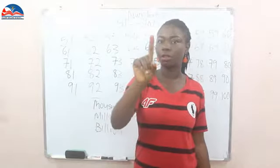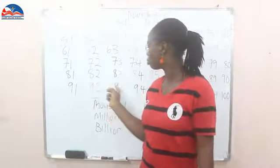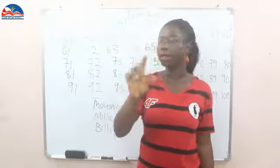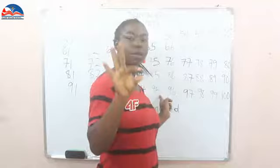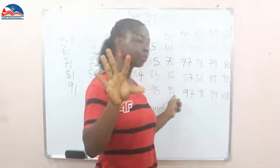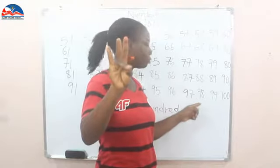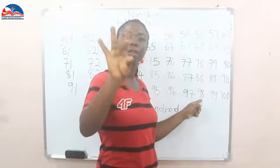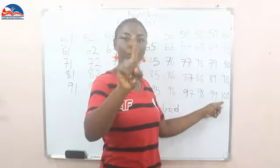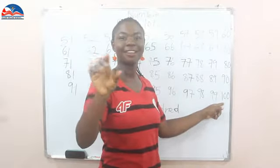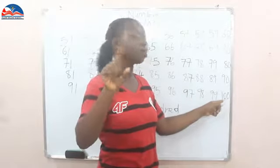91, 92, 93, 94, 95, 96, 97, 98, 99, 100. It's on zoom — this is 100.